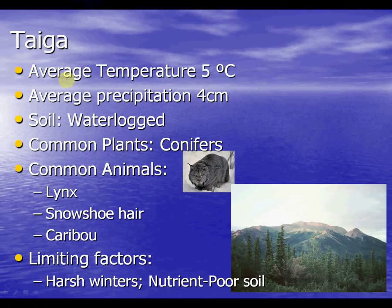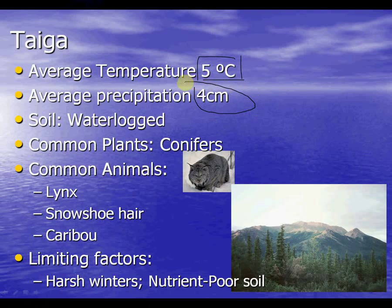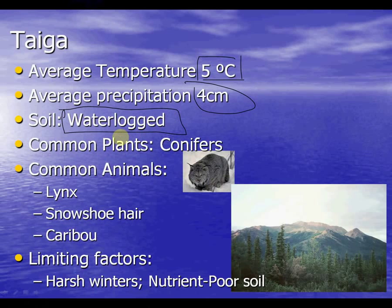For the taiga, the average temperature is five degrees Celsius — really really cold. The average precipitation is about four centimeters. The soil characteristic is that it's waterlogged, which means the water is backed up and frozen.